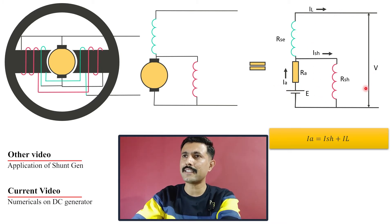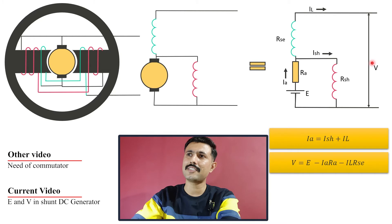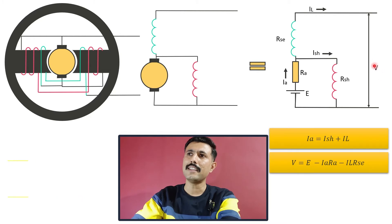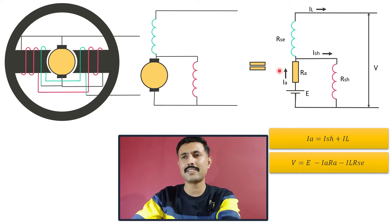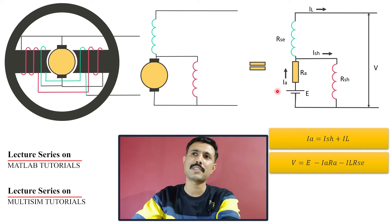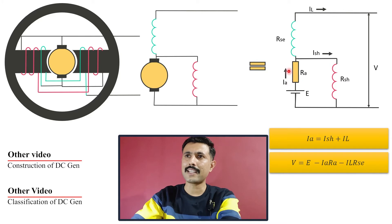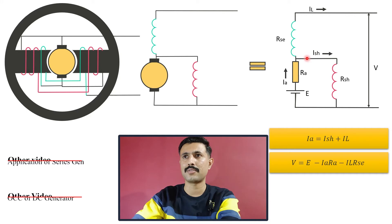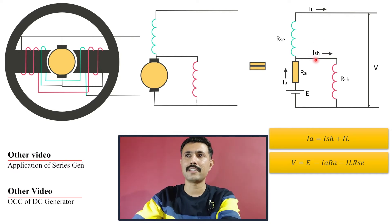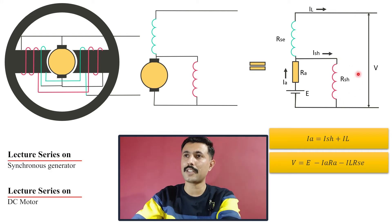Now, applying KVL in the closed loop with Ia, we get the equation where terminal voltage V equals the induced EMF minus the voltage drops across RA and RSE. To find the exact value of Ia, we also need ISH. ISH equals the voltage across the shunt field winding terminals divided by RSH. To find that voltage, we need the voltage across those two terminals.